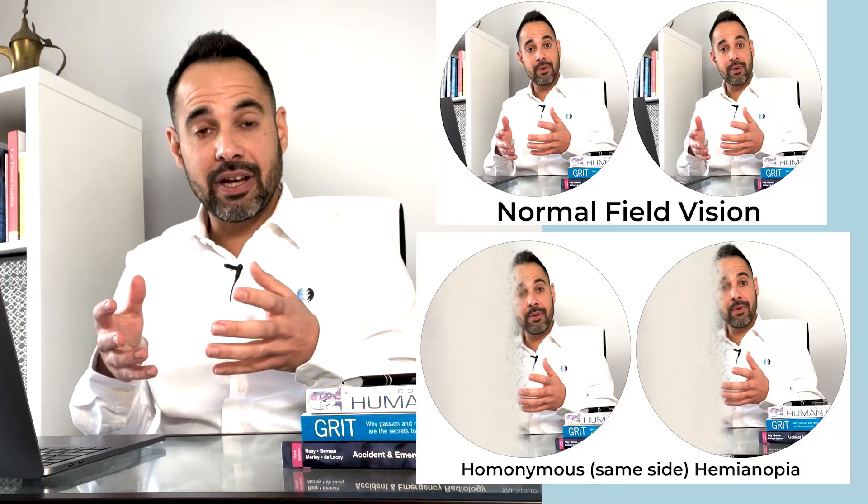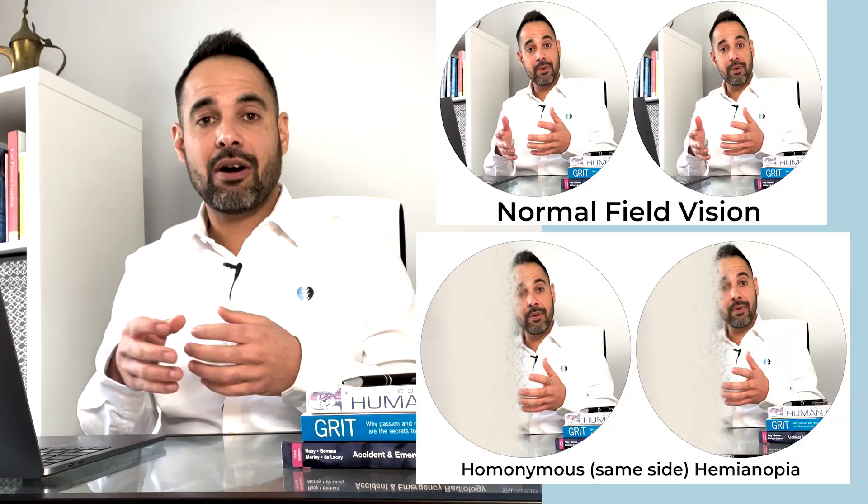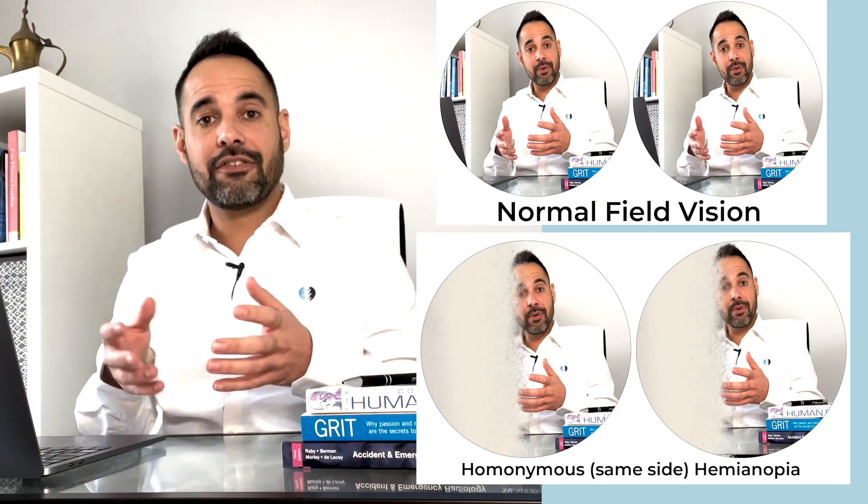Next we have hemianopia. The term 'anopia' refers to our visual field, so hemianopia is the situation where a patient has lost half of their visual field.